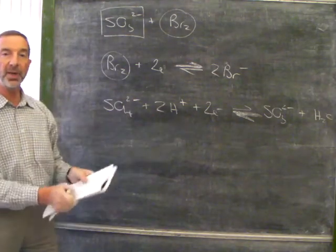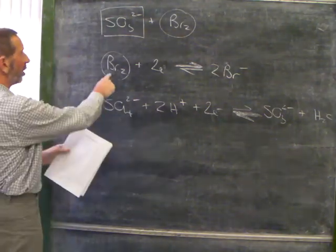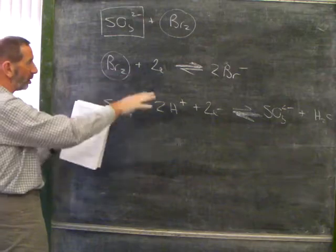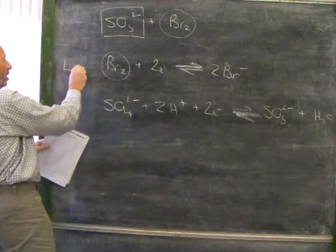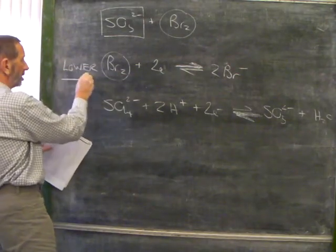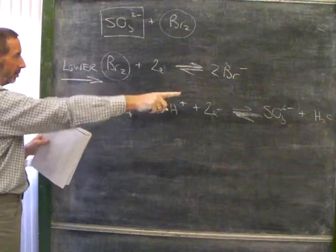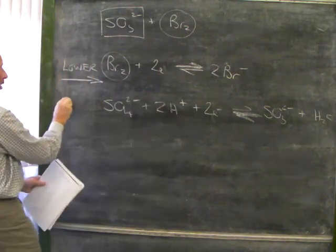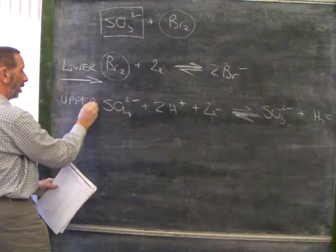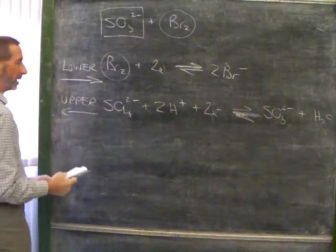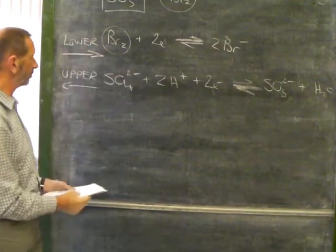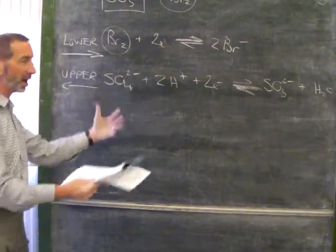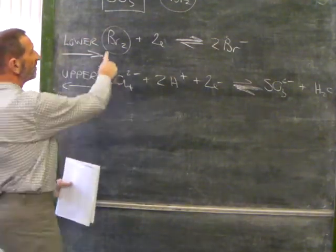One must be gaining while one is losing. An alternative way to work this out is to realize that the equation, the bromine equation which is lower down the page, the lower equation always goes that way, to the right. This equation occurs higher on the page. The upper equation always goes back the way. Anyway, here's what we need to do.